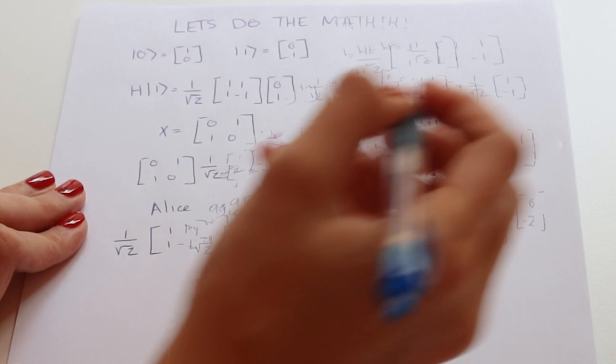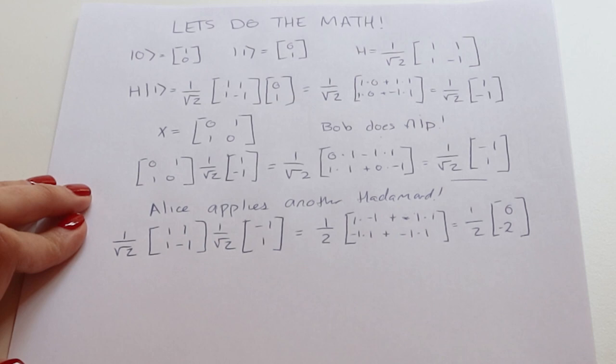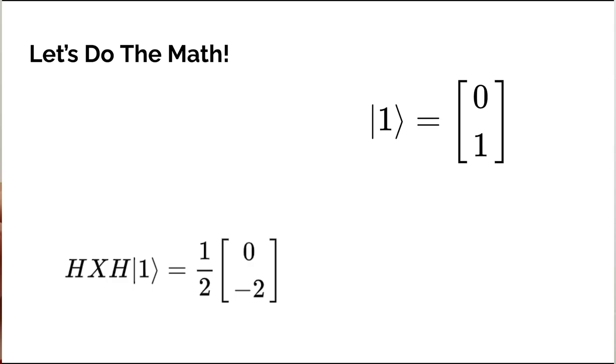So then what we want to do is Alice wants to apply another Hadamard gate. So let's calculate that out. So then we can actually take this vector here and actually divide it into the square root of two and get out a global phase. So the global phase here, the factor doesn't actually matter. So now what we actually see here is that we got our initial state back out here.